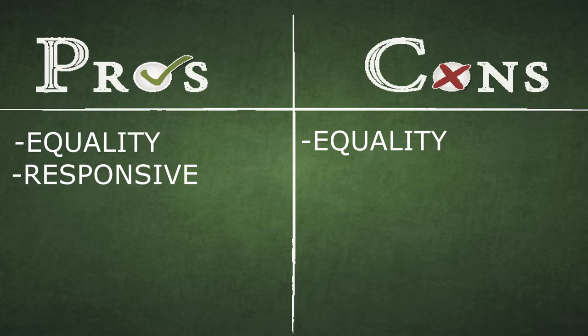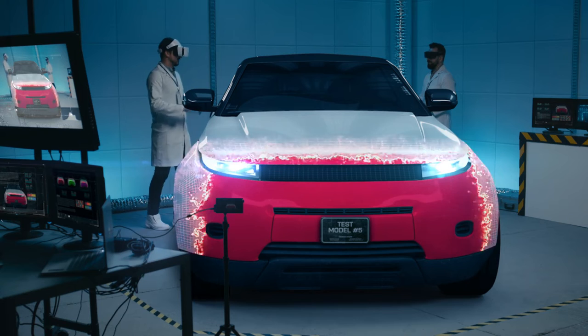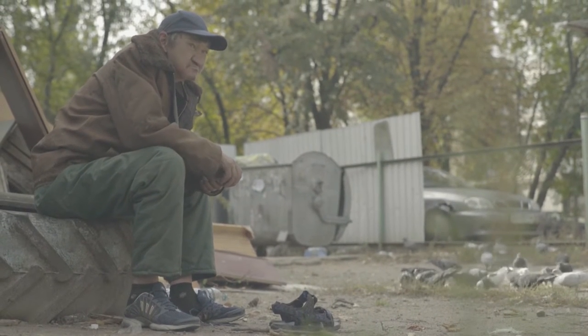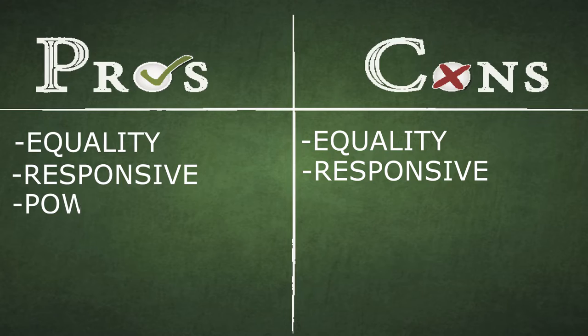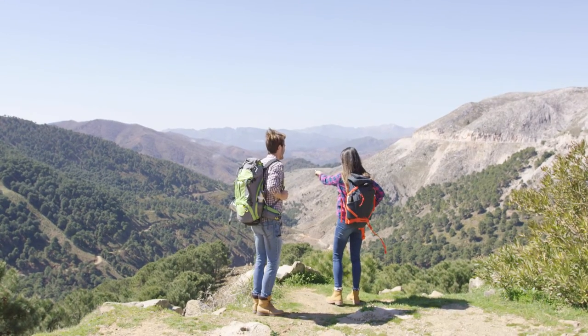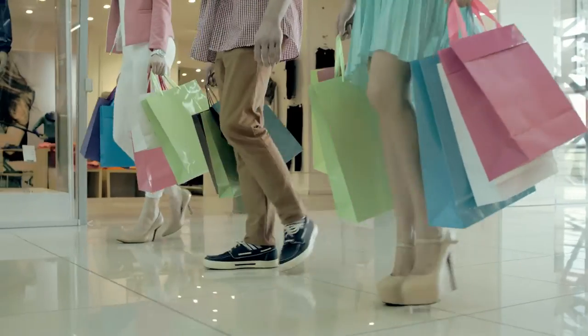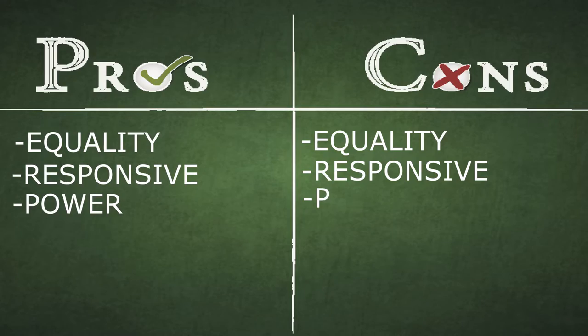Con — Responsive: quick changes can lead to bad policy or laws that might not achieve the desired effect. Rushing through changes can lead to unintended consequences. Pro — Power: people have the power to directly vote and make decisions. Majority rules, and people get what they want.